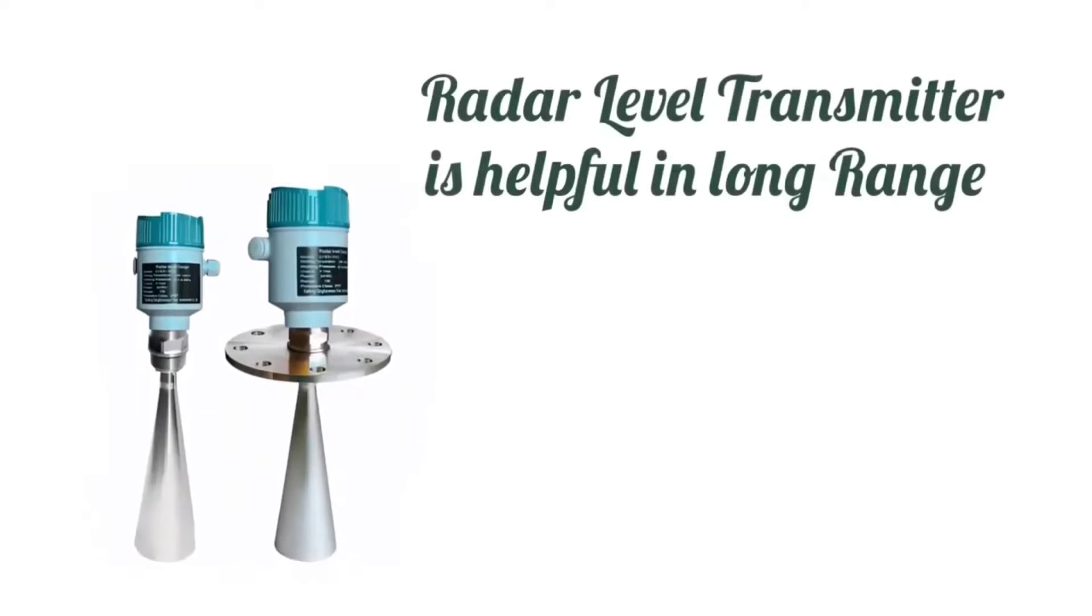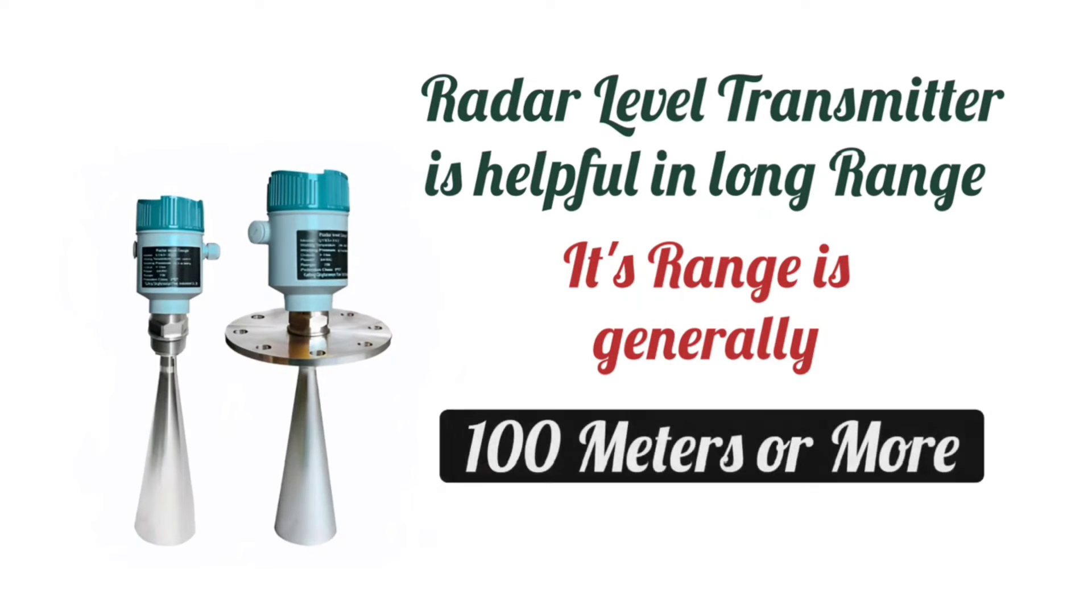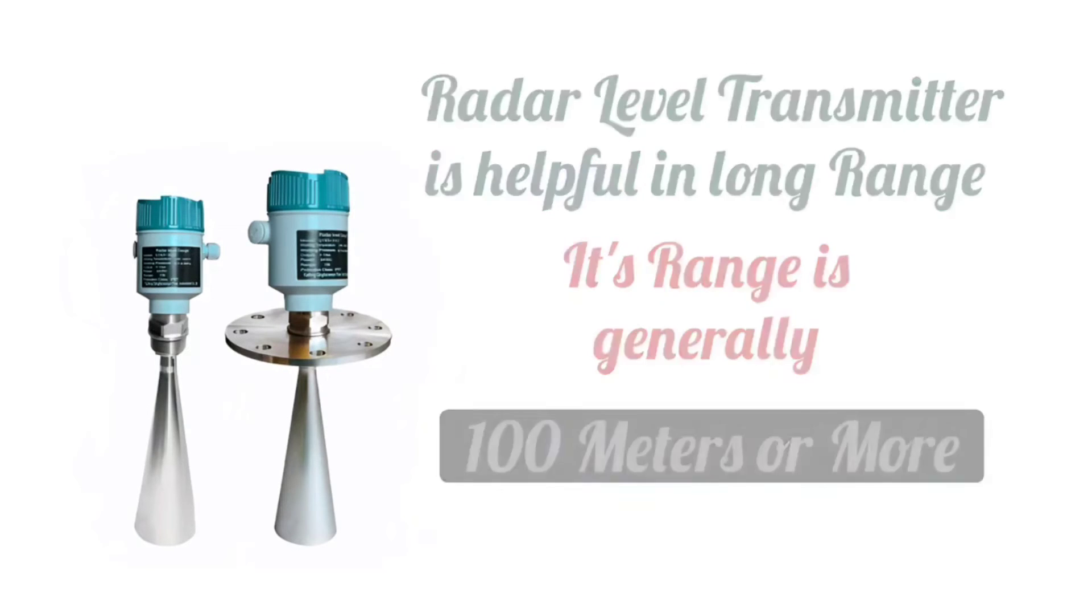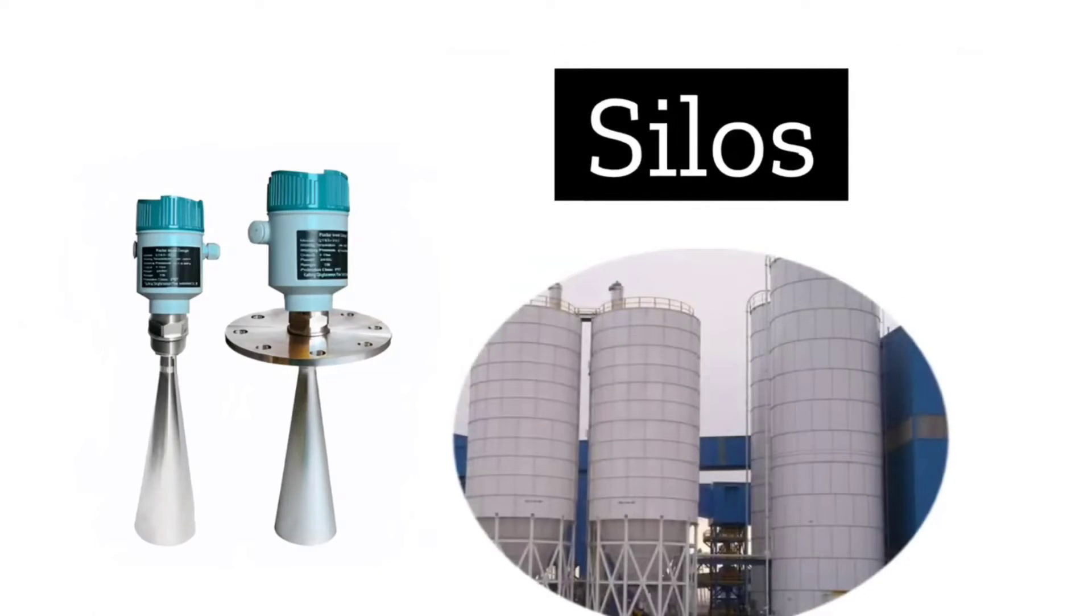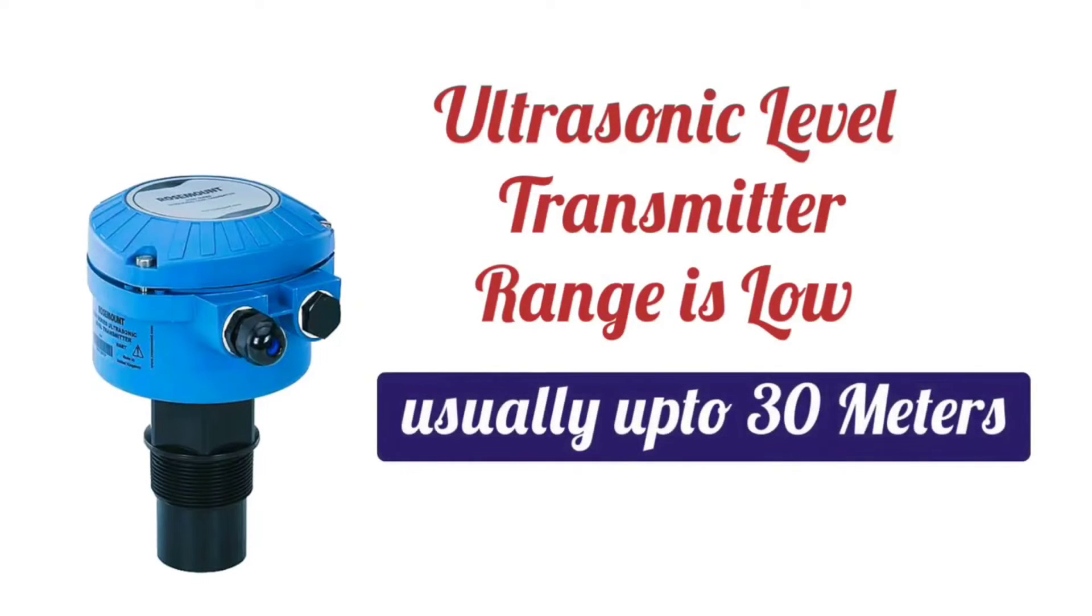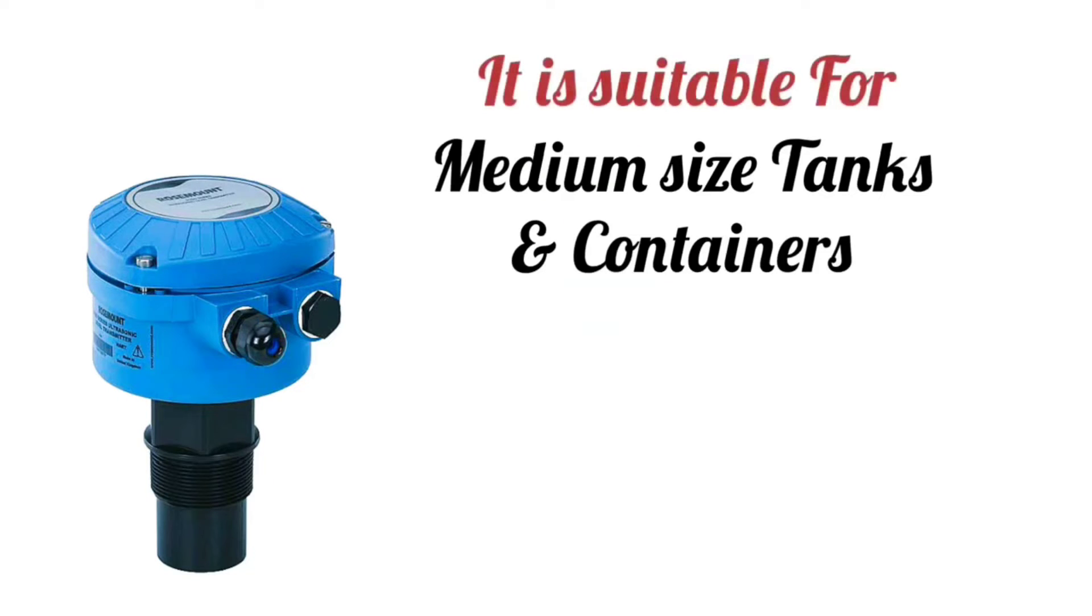Next is the range of operation. Radar level transmitters are also useful in long range applications. Its range is usually 100 meters or more, so it can be used in places such as large containers, tanks, and silos. The range of ultrasonic level transmitters is less. Its range is usually up to 30 meters, therefore it is more suitable for small to medium sized tanks and containers.